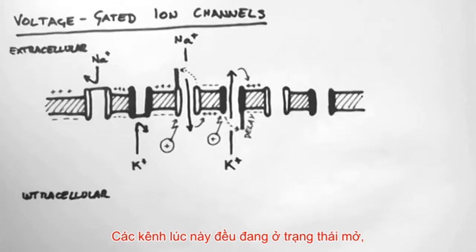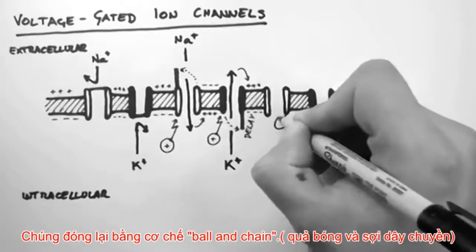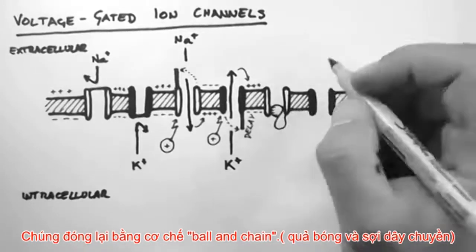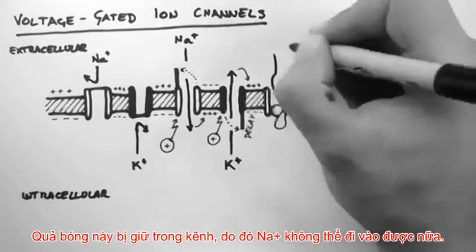These channels are both open at the moment, so they need to be closed. The sodium channels close about the same time the potassium channels open. And they close by this ball and chain method. This ball gets stuck in the channel, and sodium can't flow through anymore.